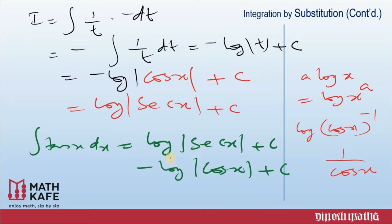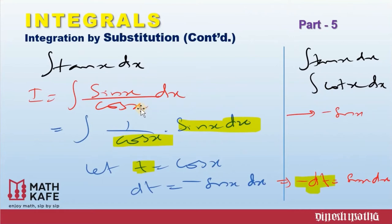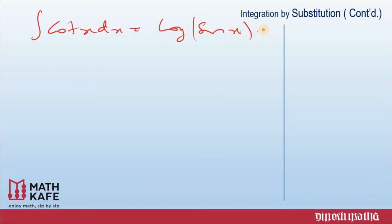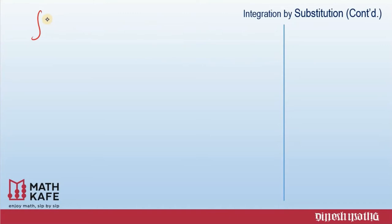Try to visualize how the proof worked — we wrote tan x as sin x / cos x and took cos x as a substitution. Similarly, the integral of cot x is log|sin x| + c, or equivalently minus log|cos x| + c. We also need to know the integrals of sec x and cosec x.